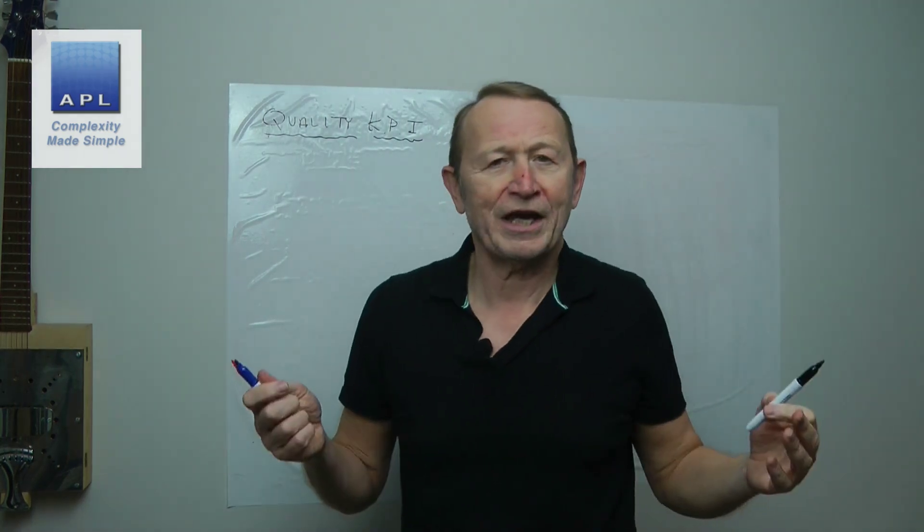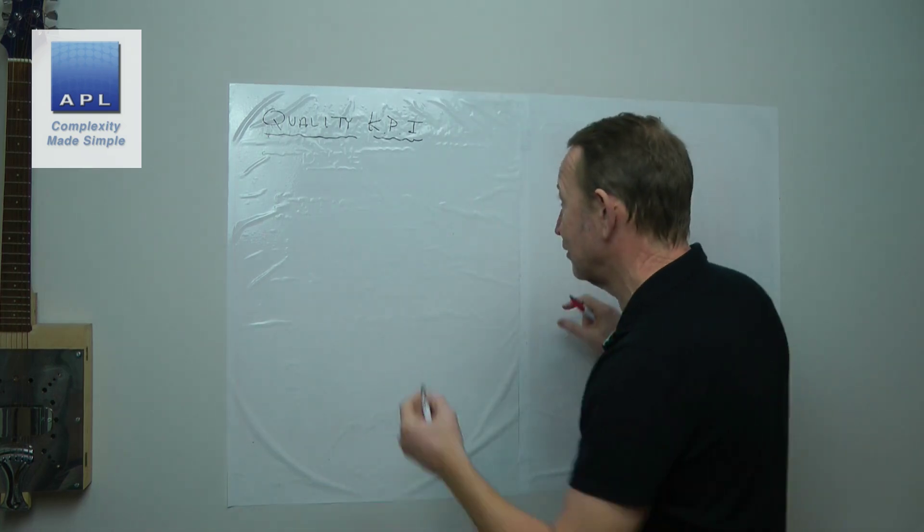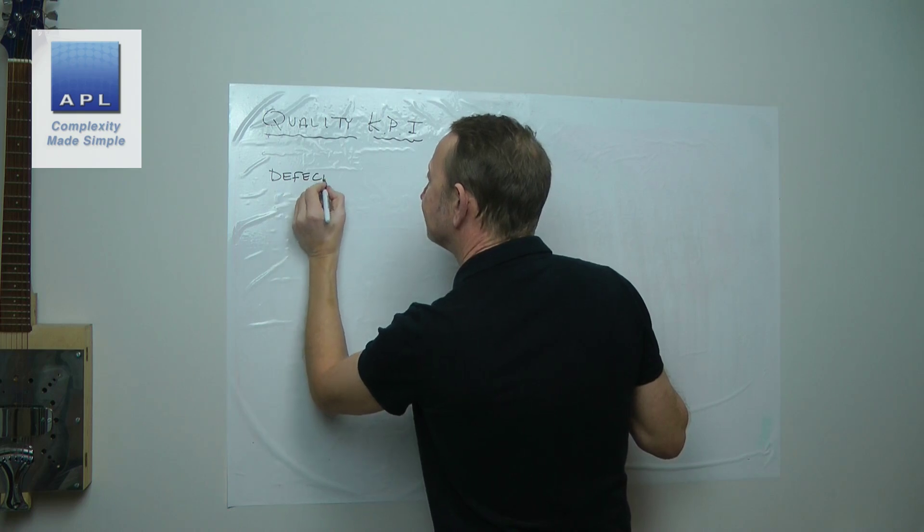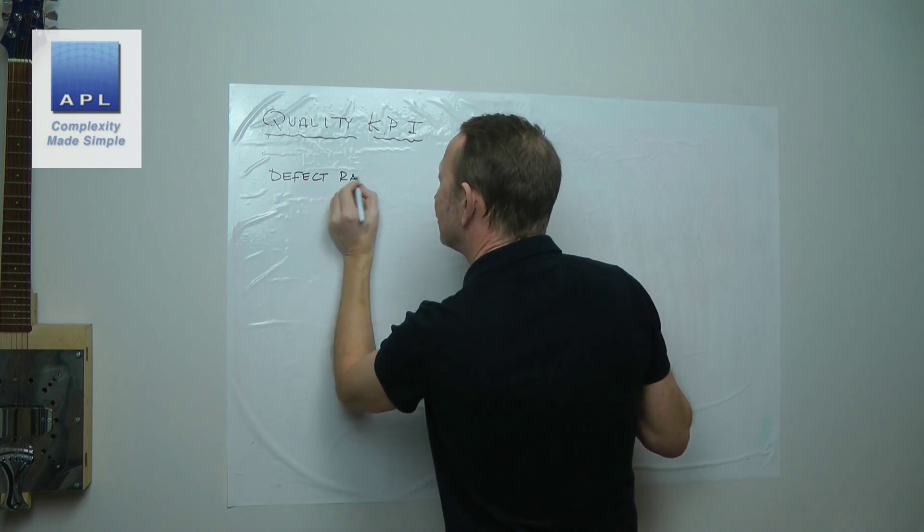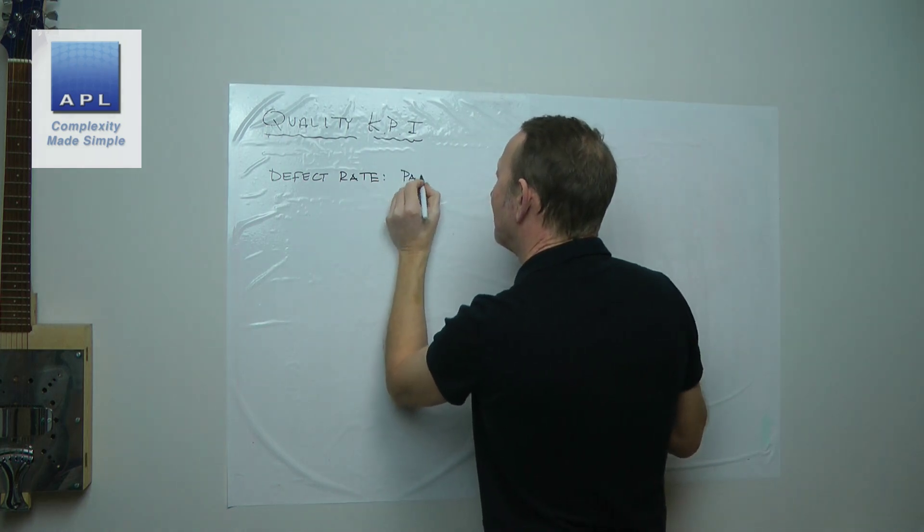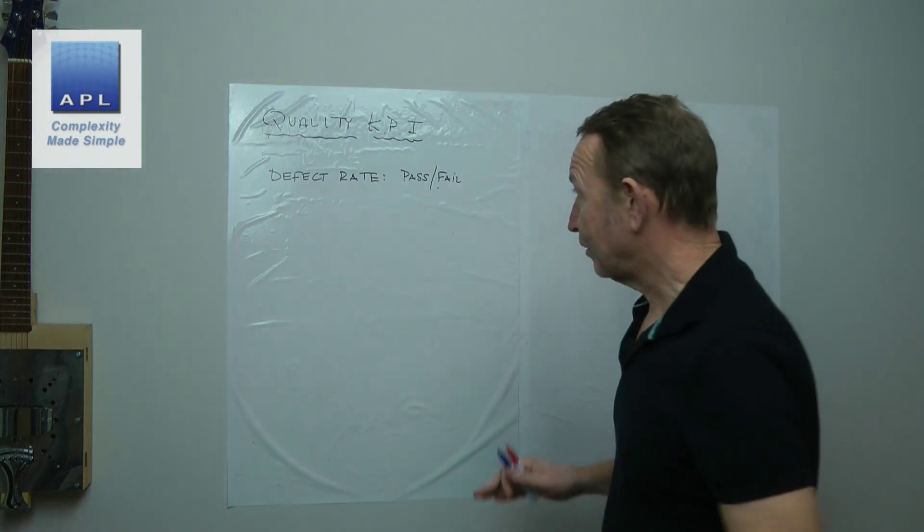The obvious one to use is defect rate. Defect rate, nice and simple. You do an end of line test, you go pass fail and they go defect rate.